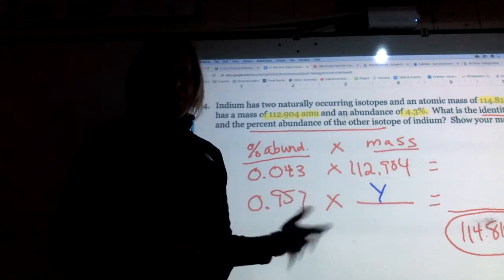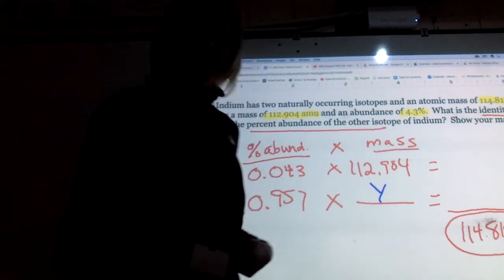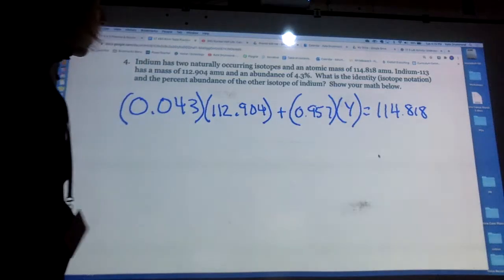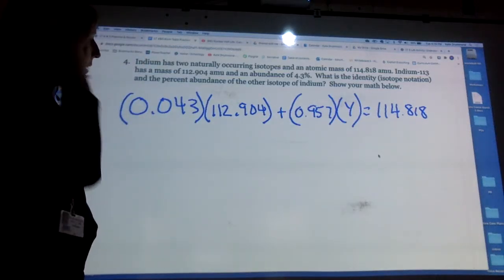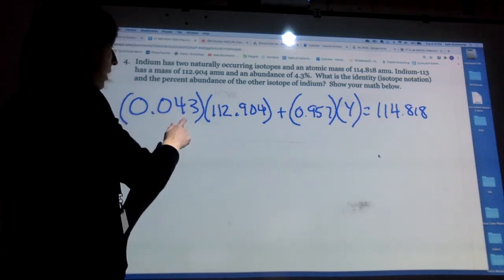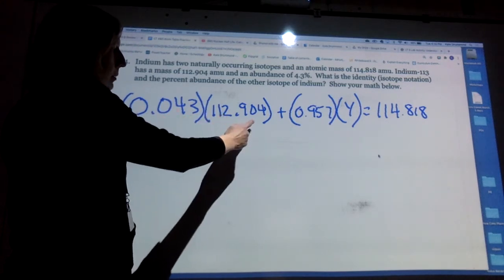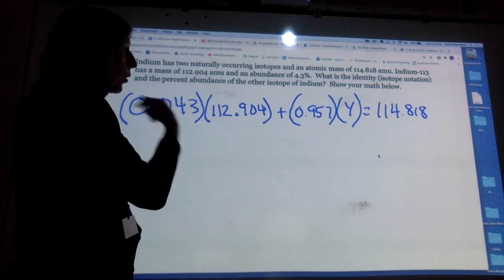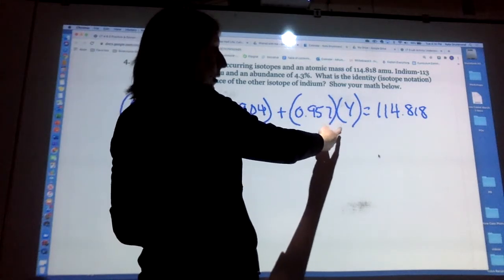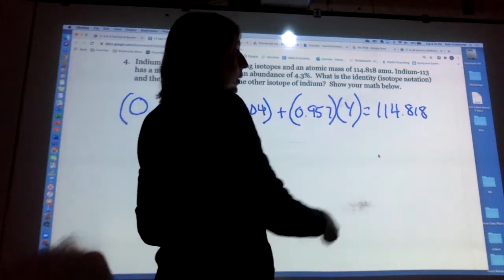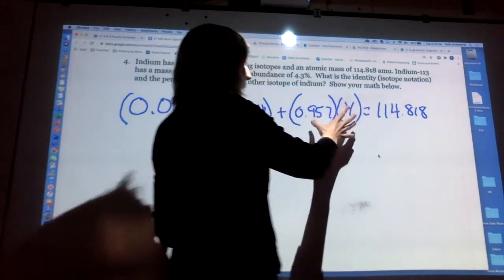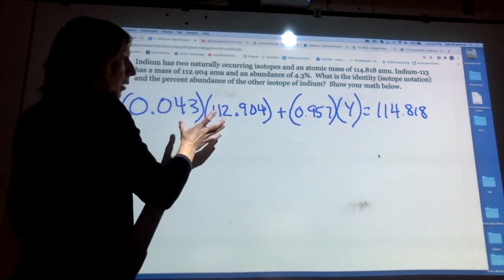So now I have the problem set up algebraically. I have the percent abundance times the mass of the isotope that I do know, the percent abundance of the other isotope with the mass that I don't know, and then when I add the two multiplication problems together they should give me the average atomic mass for indium.